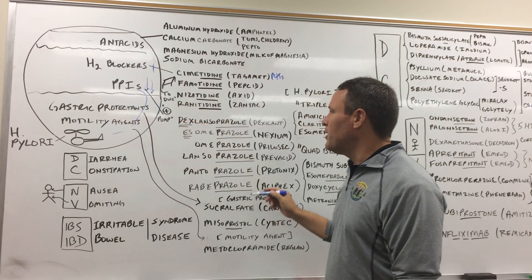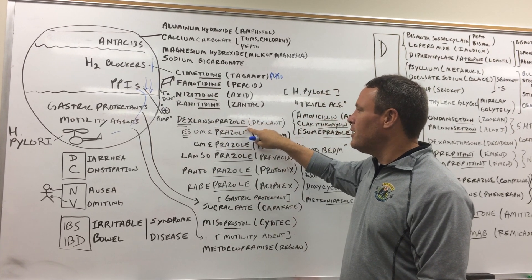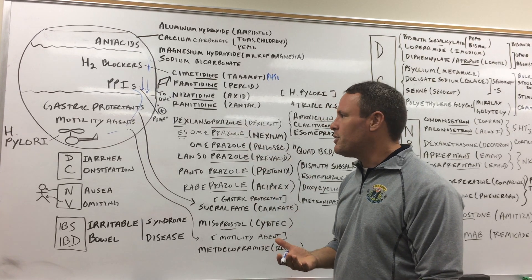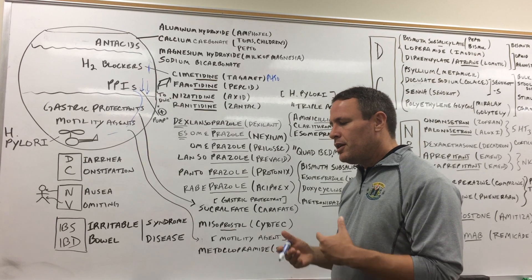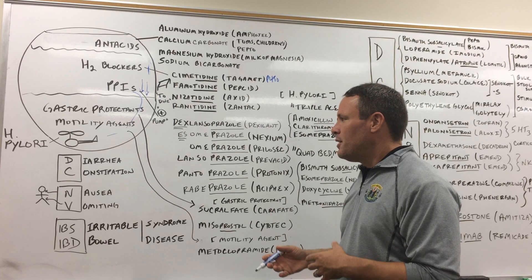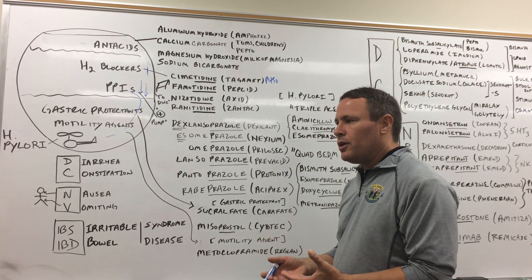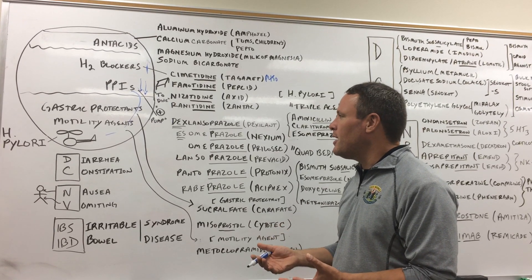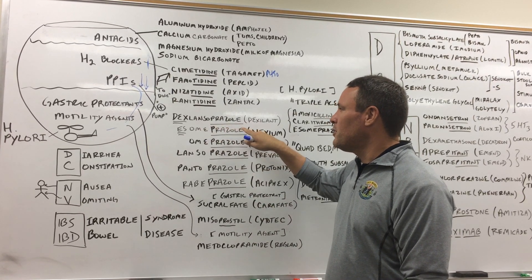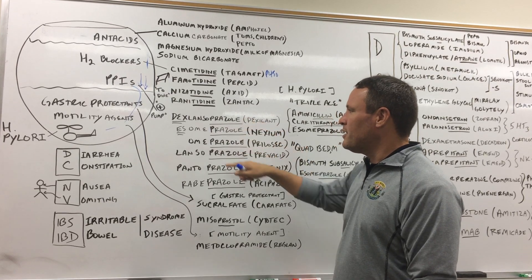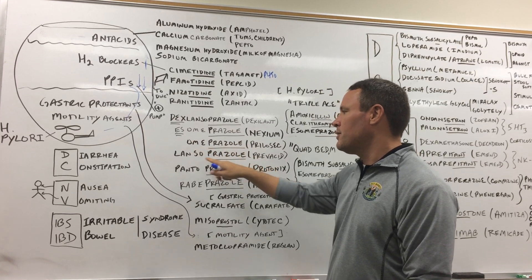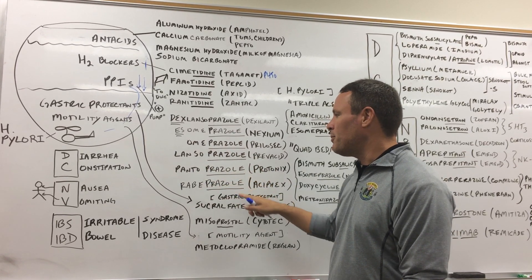So now we have a proton pump inhibitor. Again, we have our prezole ending. Be careful again with this. It's not azole. Azole is a type of organic chemistry compound because there's fluconazole, which is an antifungal. There's aripiprazole, which is for certain schizophrenia, things like that. So what we want is to make sure we have the right ending. So prezole. And then we have six of these, and I just put them alphabetically. Dexlansoprazole, esomeprazole, omeprazole, lansoprazole, pantoprazole, and rabeprazole.